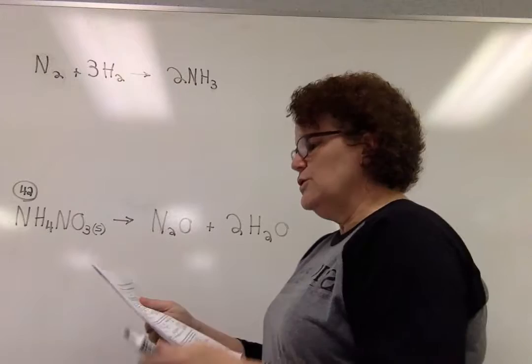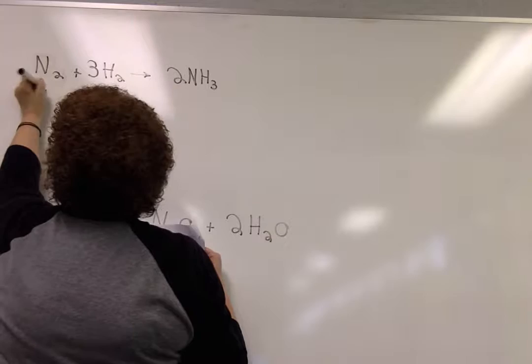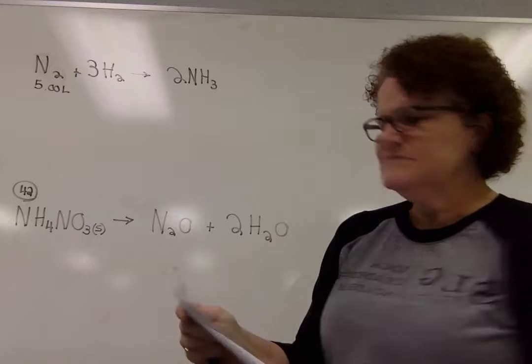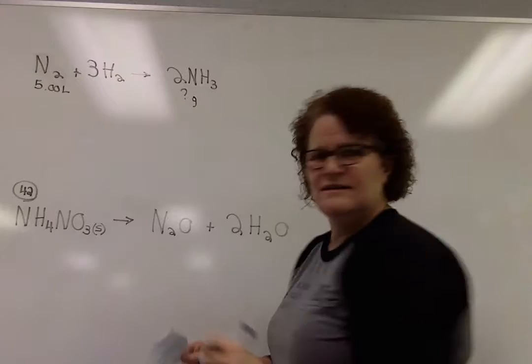So let's see what we actually have. We have been told that we have five liters of nitrogen. And the question then is how many grams then are we going to be able to produce of the ammonia?